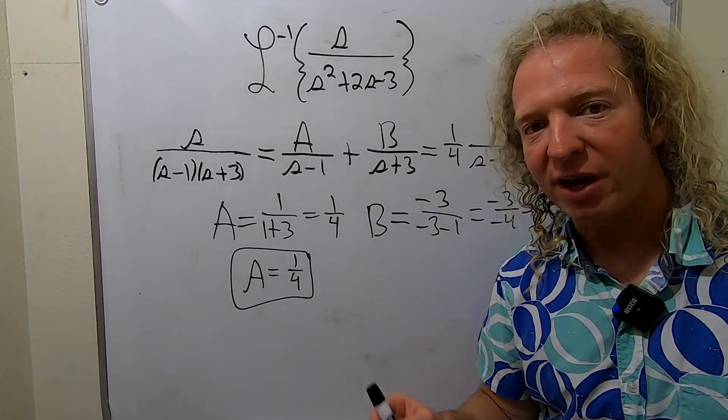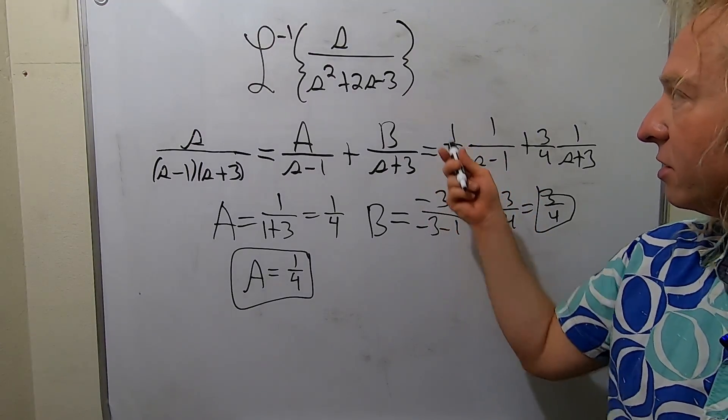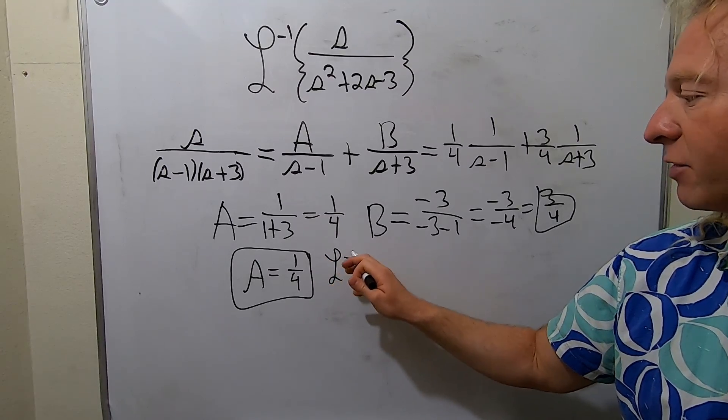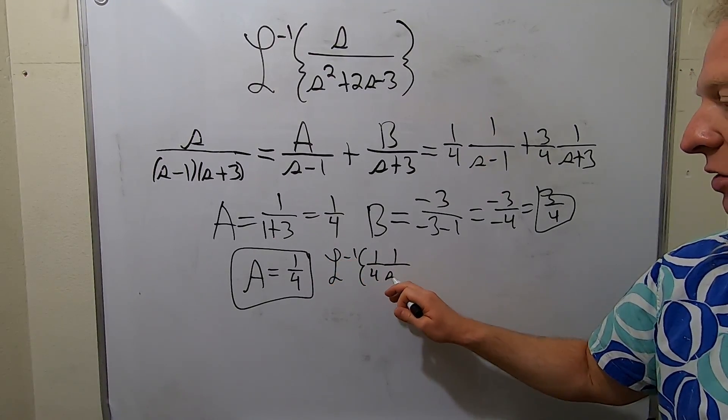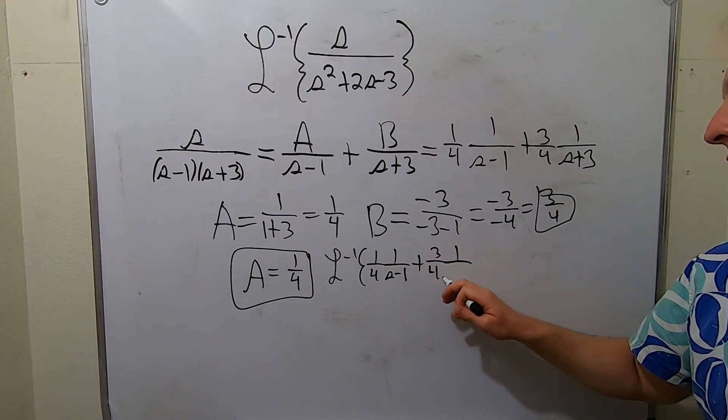Now we just have to take the inverse Laplace of this. So when we do that, we can pull out the constants because the inverse Laplace is linear. So I'll actually show all the work. This is the inverse Laplace of 1 fourth, 1 over S minus 1, plus 3 fourths, 1 over S plus 3.